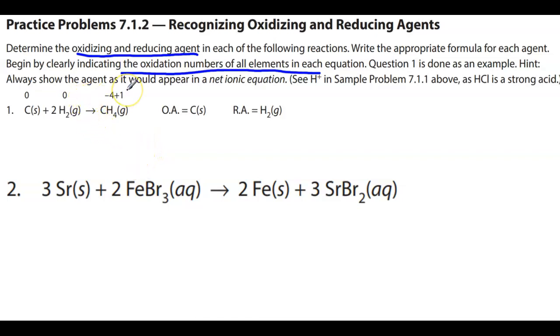Okay, so hint. Always show the agent as it would appear in the net ionic equation. Yeah, so what they're saying here for the net ionic equation is instead of showing, for example, FeBr3, right,